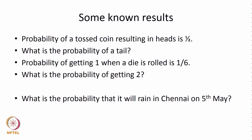Probability of a tossed fair coin resulting in heads is half. This is something that all of us have learnt — when you toss a coin, probability of getting a head is 0.5 and probability of getting a tail is also 0.5. When we toss the coin we believe that there are only two outcomes, either a head or a tail, and if the probability of getting a head is half then the sum of the probabilities has to be 1, and therefore the probability of getting a tail is also half.